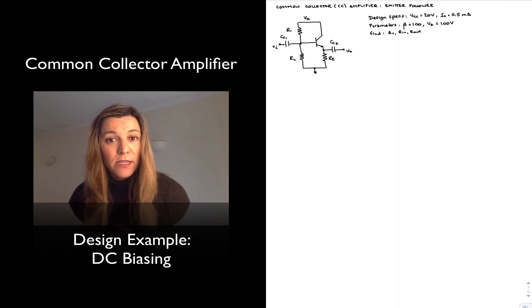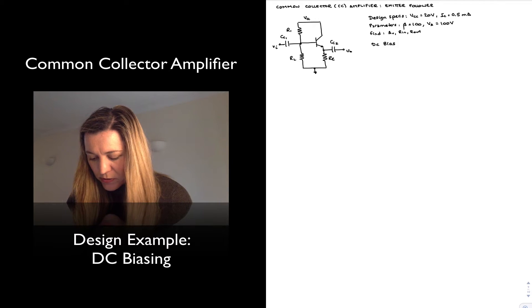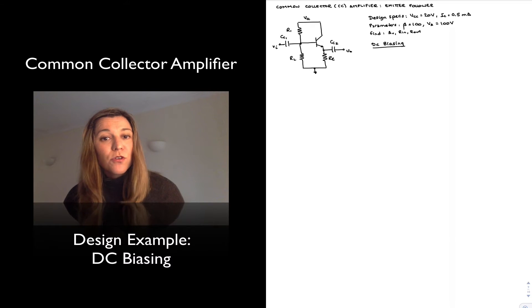First, as always, I need to design the DC biasing network. I'm always going to follow the same steps, similar to when we design the DC biasing network for the common emitter amplifier.